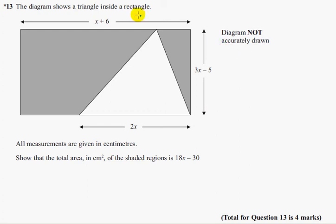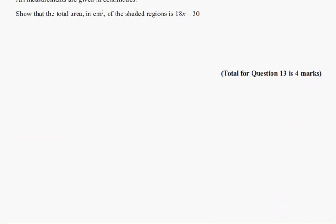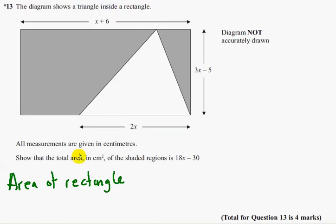So let's do the area of the whole rectangle first of all, which is going to be x plus 6 times 3x minus 5. So the area of the rectangle is x plus 6 multiplied by 3x minus 5.